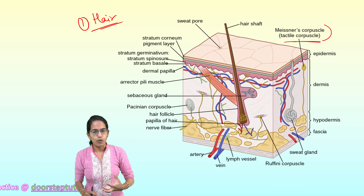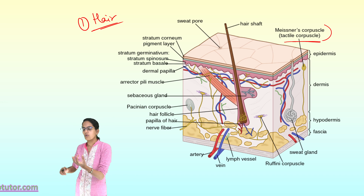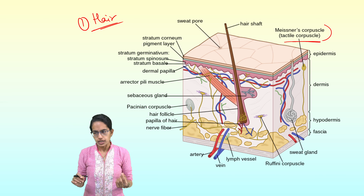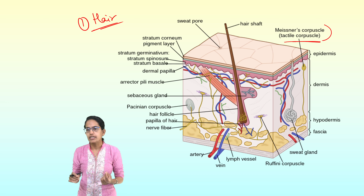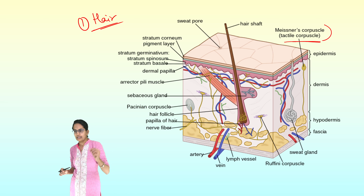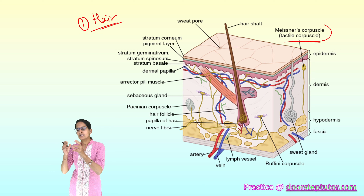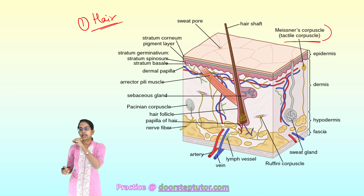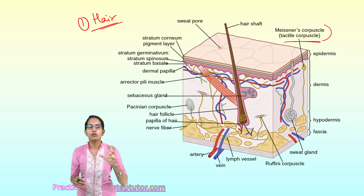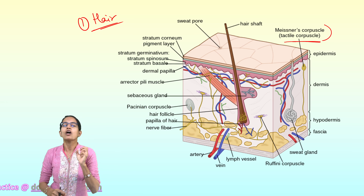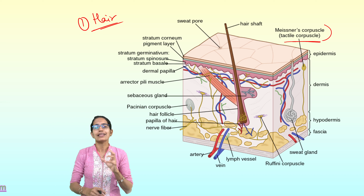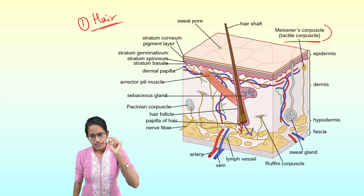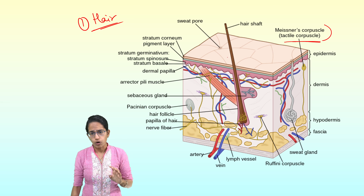The structure of hair is enclosed in a sack known as the hair follicle. The follicle is made up of epithelial and connective tissues and is associated with the erector pili muscle. During cold months, contraction of the erector pili muscle leads to erection of the hair.